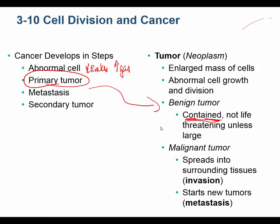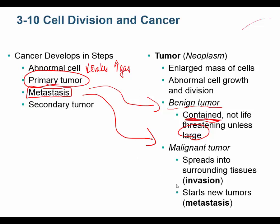Benign tumors are quite often encapsulated, and the cells don't become very primitive — they stay somewhat differentiated. A benign tumor is simply a growth that may or may not be harmful depending on its size. It's not malignant in the sense that it won't spread. But if the primary tumor metastasizes — meaning it spreads — then it's malignant. The definition of a malignant tumor is that it invades secondary tissues and sets up secondary tumors there. Malignant tumors can metastasize; benign tumors cannot and are self-contained. This all has to do with mutations in the genes for cell division — the growth factors and the tumor suppressor proteins.